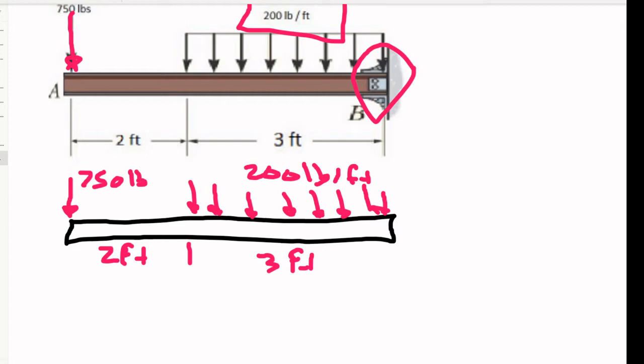And then we're going to have our reactions at B. So we're going to have some sort of reaction in the x-direction and some sort of reaction in the y-direction. And since it is a fixed support, we're also going to have a moment applied at B. I'm going to draw the moment in a different color.